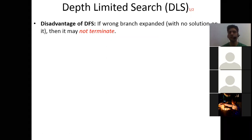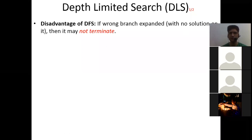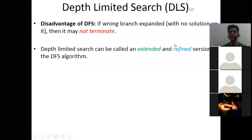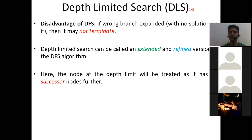The disadvantage of DFS is: if we have picked the wrong branch and that branch has an infinite kind of depth, then the search may not terminate. So depth limited search is a refined and extended version of DFS. The idea is that the node at the depth limit will be treated as if it has no successor nodes. We just ignore the children of that particular depth limit node — we don't want to visit beyond that limit.